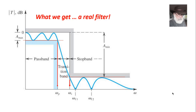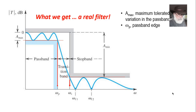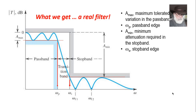Let's write down all the parameters. A_max is the maximum tolerated variation of the filter in the pass band — a design decision, typically 1 to 3 dB. Omega_p is the edge of the pass band, closely related to A_max. A_min is the minimum attenuation required in the stop band, and omega_s is the edge of the stop band. Between them is the transition band, whose width is represented by the selectivity factor, omega_p divided by omega_s — a number less than 1. The closer to 1, the better the filter.